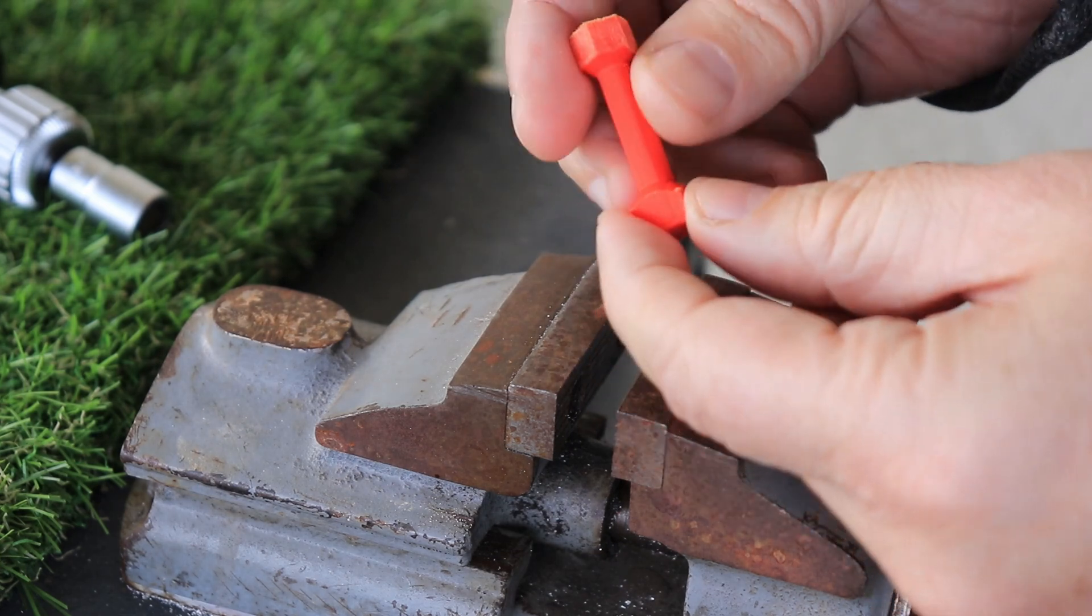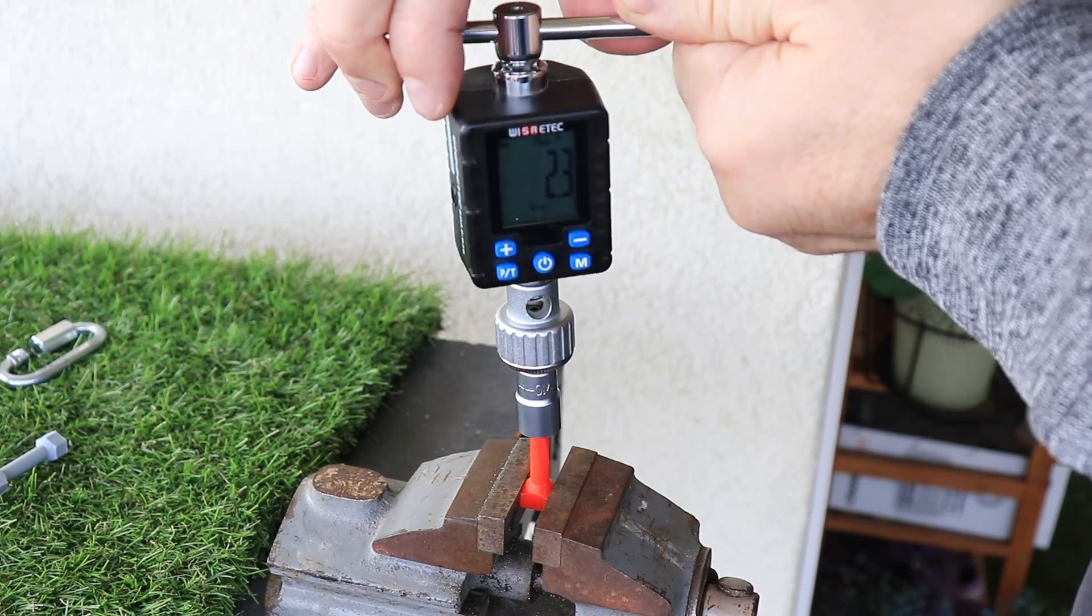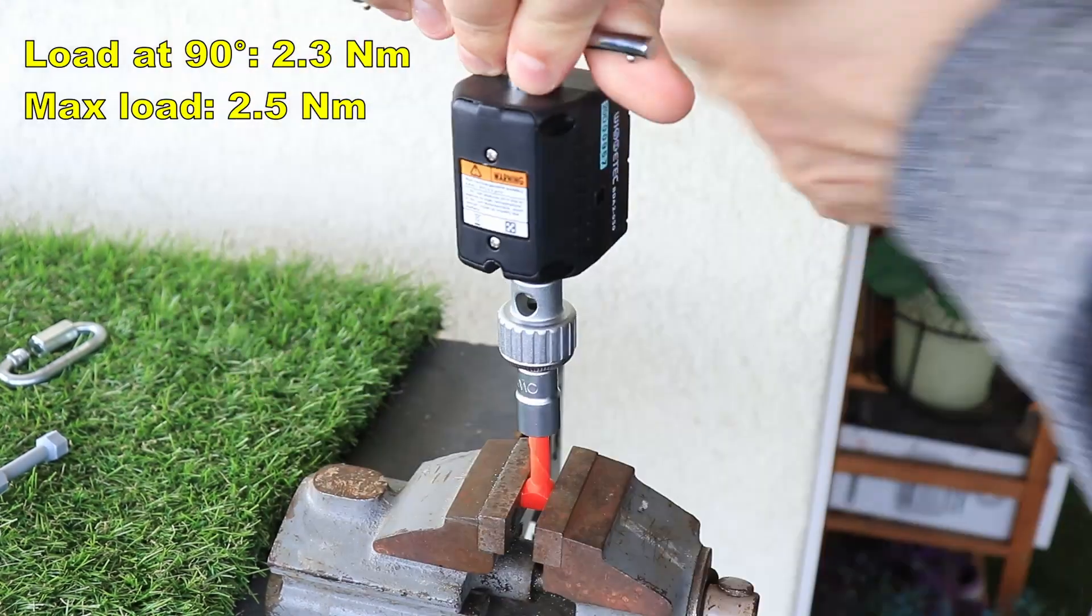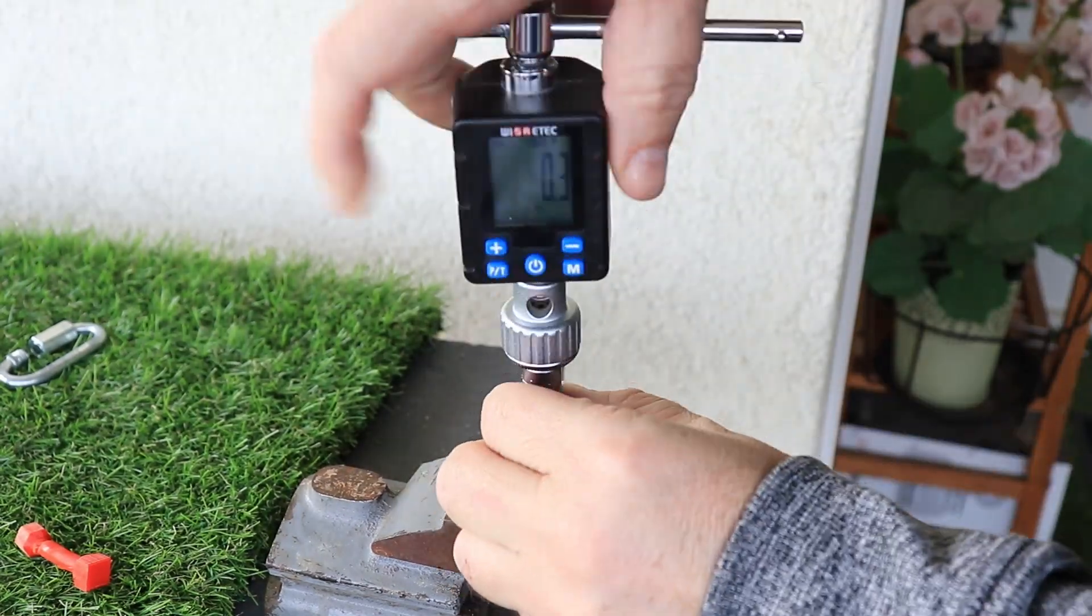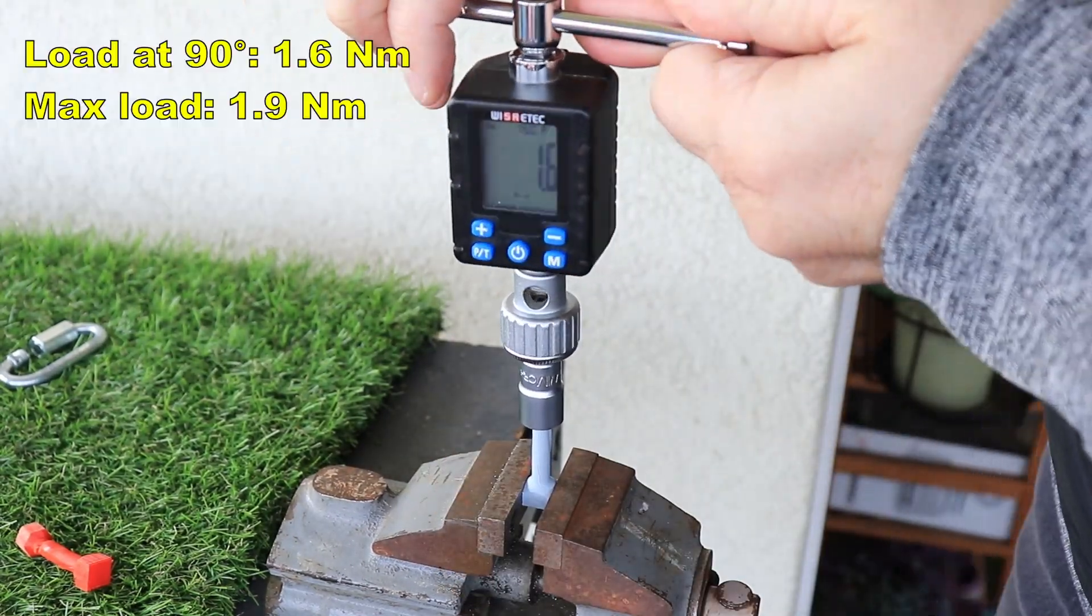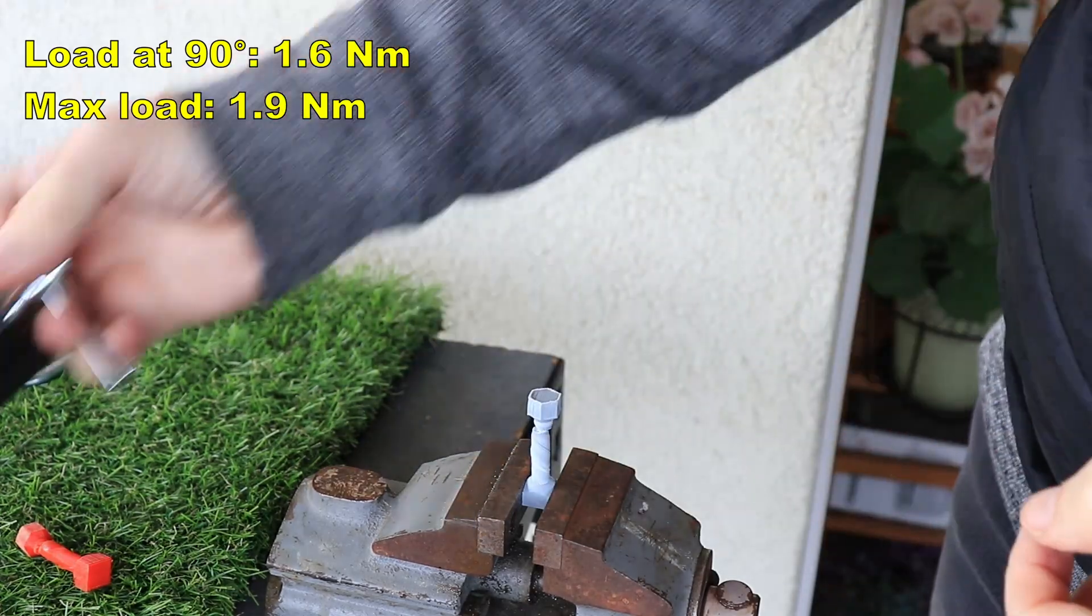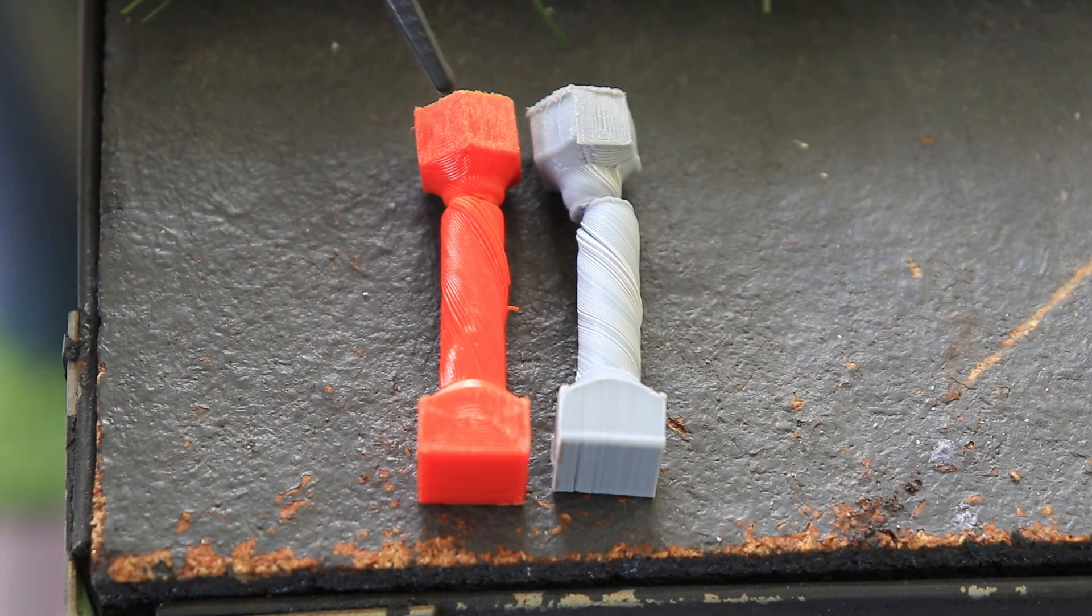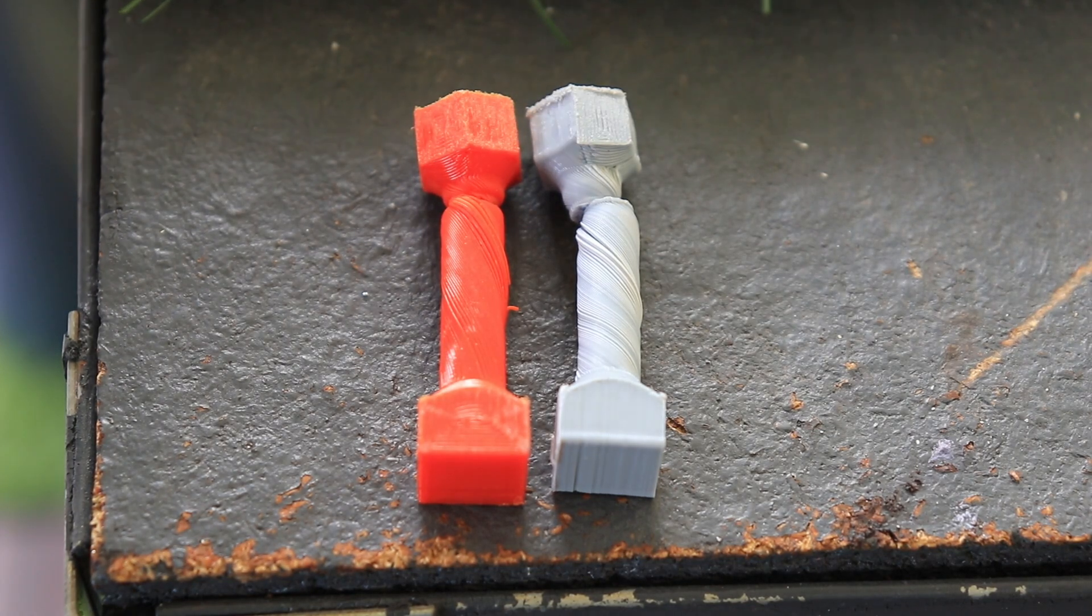Now torque or twist test, and I want to record the load at 90 degree angle and the maximal load. The diameter of this test object is 6mm. The Strongman is not as strong as PLA in this test, but I could make more rotation. This means it is less brittle material.